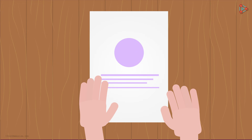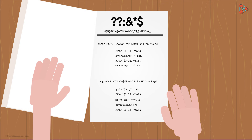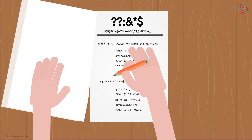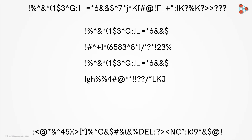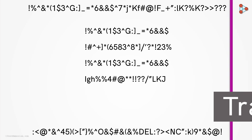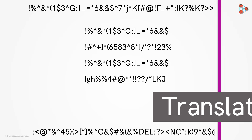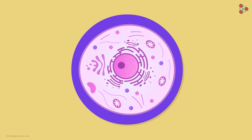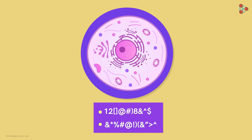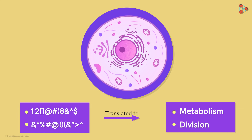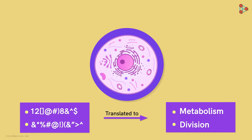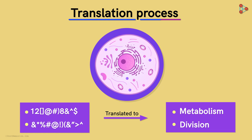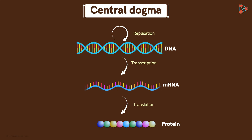Imagine you are appearing for an exam, but the paper presented to you is in a language that you don't understand. You are prepared for the exam, but interpretation of the questions is a problem. Some help from a translator would work wonders. So translation is the simplest way to solve this problem — decode the unrecognizable language and then attempt the exam. Now imagine the cell is in a similar situation. It encounters a set of instructions for performing a task, but the instructions are written in a coded language. All it needs to do is translate this language and then perform the task. We are talking about the translation process, the next step of the central dogma of life.